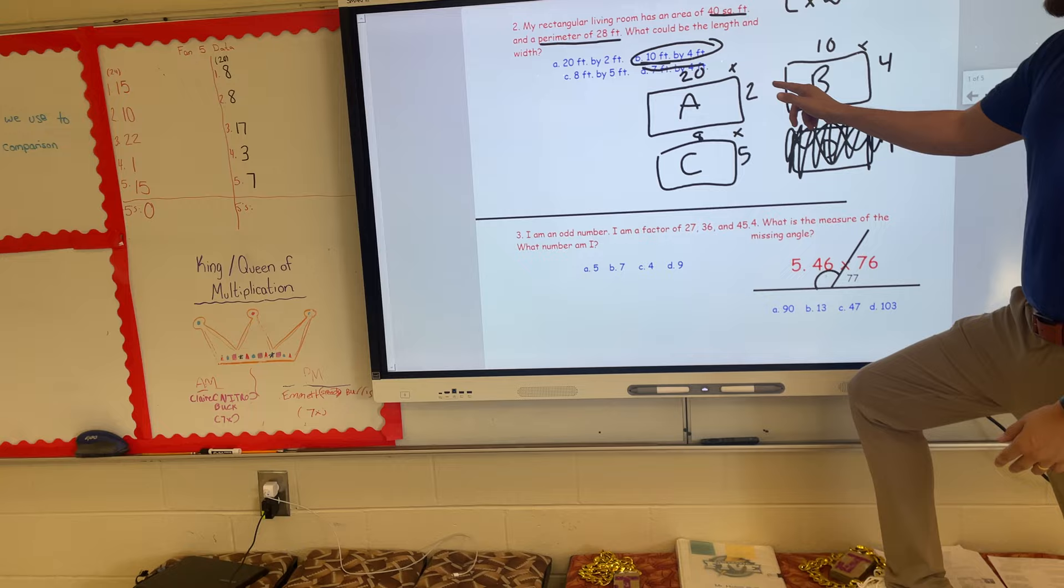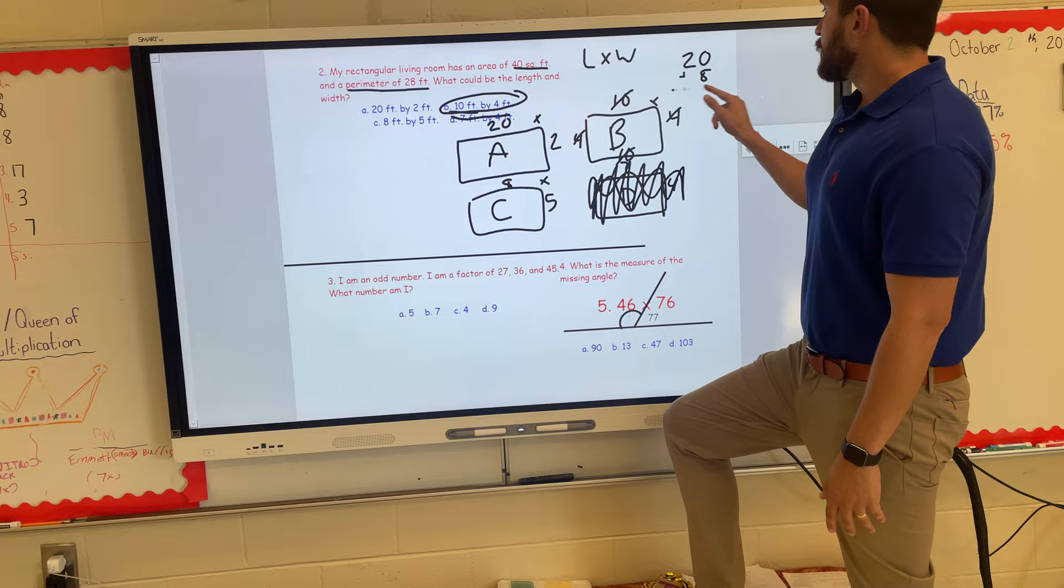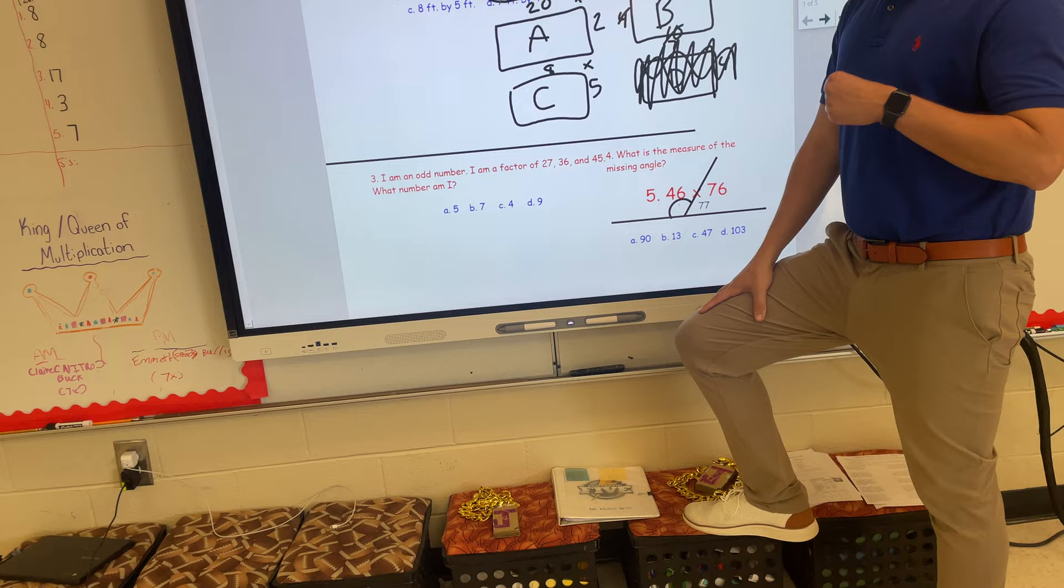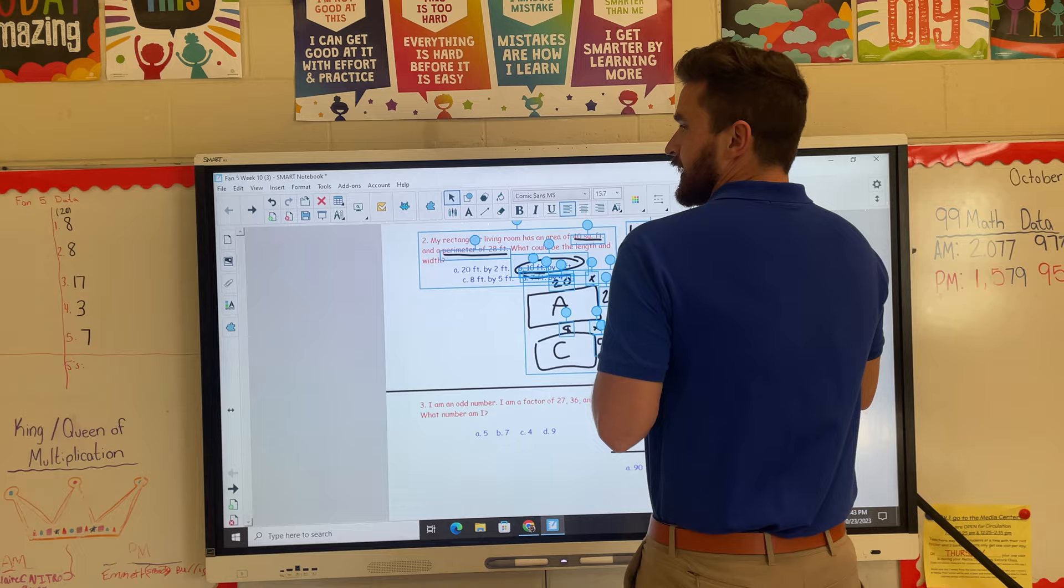The answer is B because we know opposite sides are equal. I would have four for my widths, 10 for my lengths. If I did 10 plus 10, that would give me 20. 4 plus 4 would give me 8. Add those together and I'd have a perimeter of 28. So it's got to fit both descriptions. Honestly, the people who missed that one are just going to be the people who aren't willing to do the work.